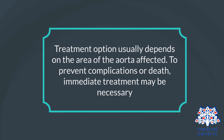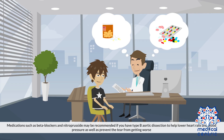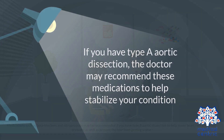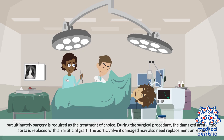Treatment option usually depends on the area of the aorta affected. To prevent complications or death, immediate treatment may be necessary. Medications such as beta blockers and nitroprusside may be recommended if you have type B aortic dissection, to help lower heart rate and blood pressure, as well as prevent the tear from getting worse. If you have type A aortic dissection, the doctor may recommend these medications to help stabilize your condition, but ultimately surgery is required as the treatment of choice. During the surgical procedure, the damaged area of the aorta is replaced with an artificial graft. If the aortic valve is damaged, it may also need replacement or repair.